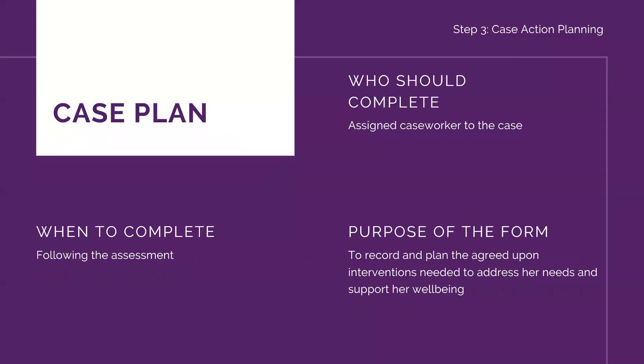Then we have the case plan. The case planning process starts after assessment — this is the third step of the case management process. The reason for this is that we have to know where we are first before we can plan where we want to be, so this follows the assessment period. This is performed by the assigned caseworker, and the point of this is to document the needs, goals, services, and referrals — the ways we are supporting the survivor's well-being and recovery.